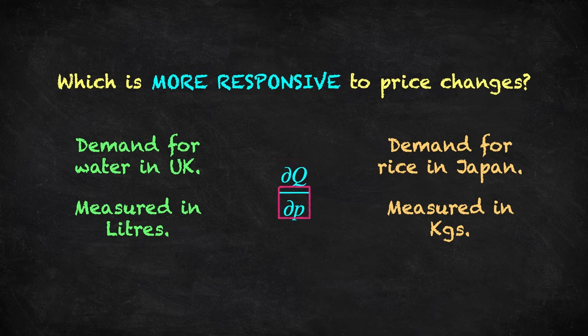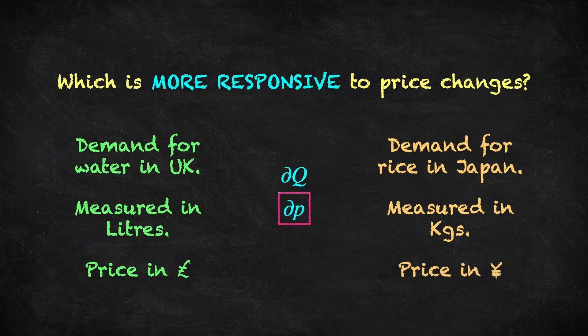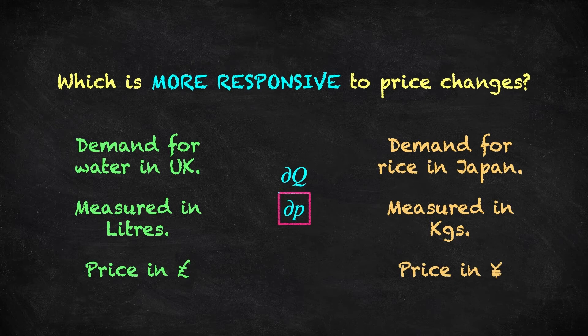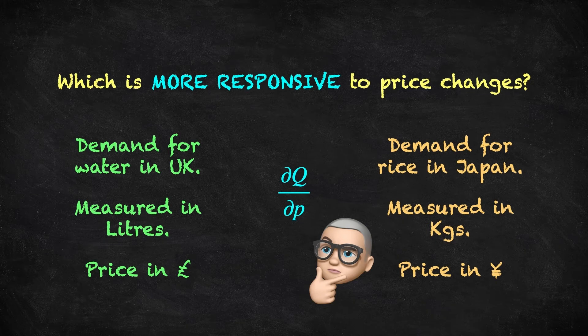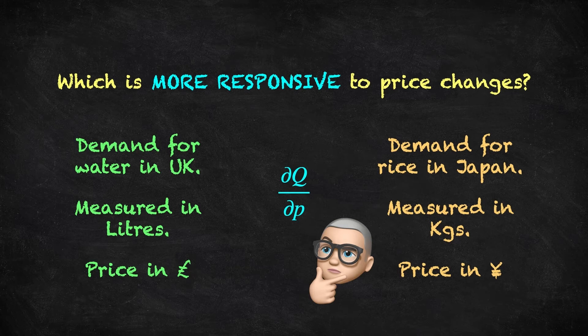Also, this change in the price term. In the UK, this is measured in pounds sterling, and in Japan it's measured in yen. So again, comparing these changes has the problem of different units. Perhaps we could look up the current exchange rate, but maybe there's a better way. Take a moment and pause the video perhaps, to think about how you would approach this problem and see if you can fix these issues.